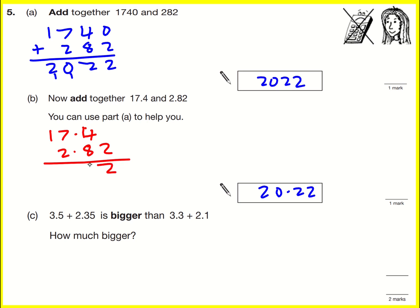4 plus 8, 12, put the decimal point in, 7 plus 2, 10, sorry 9, plus the 1, 10, and then we get again 20.22.